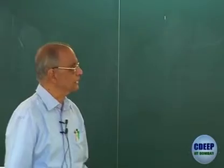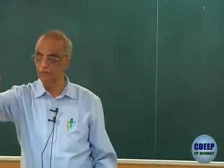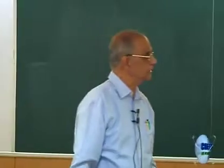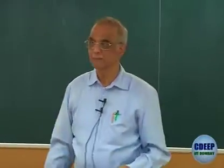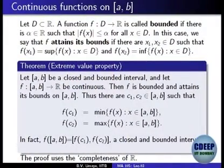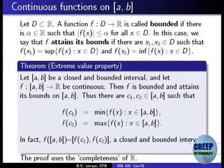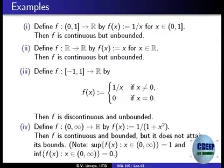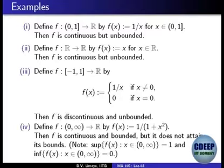If you remove some of the hypotheses — for example, if the interval is not closed (half open, half closed) or if the interval is not bounded (e.g., goes all the way to infinity) — the theorem is false. I have listed some examples; I have no time to discuss them, but you should look at them. If you drop the hypothesis of closedness, boundedness, or continuity, the maximum and minimum will not be attained — maybe the function is not even bounded, or it is bounded but the maximum and minimum do not exist.